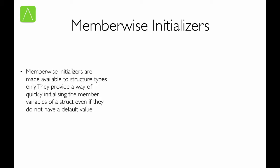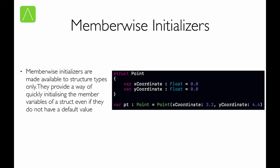Member-wise initializers are provided only to structure types. The idea is to give an easy way of providing your own custom values to the member variables through the initializer. This is irrespective of whether a default value is provided or not. Take the example of a struct Point. It has two member variables, x-coordinate and y-coordinate, both of which have been assigned a default value of zero. The statement below calls a constructor we have not implemented — this is a member-wise initializer that takes two arguments corresponding to the two member variables, allowing you to provide your own values for x-coordinate and y-coordinate.